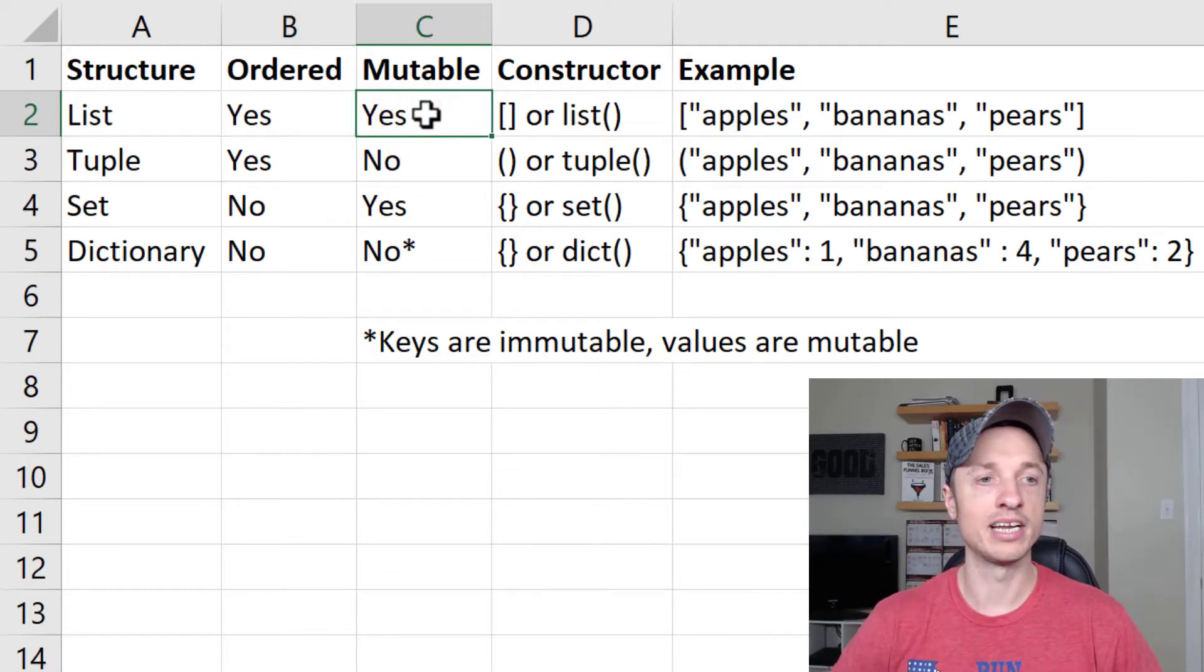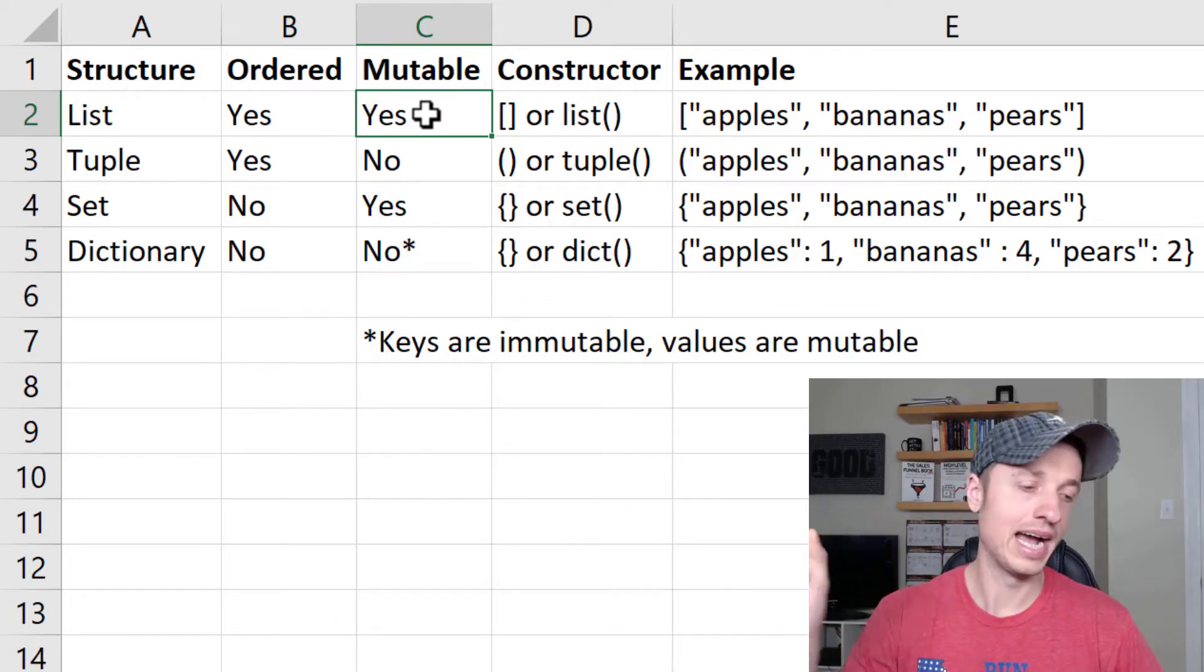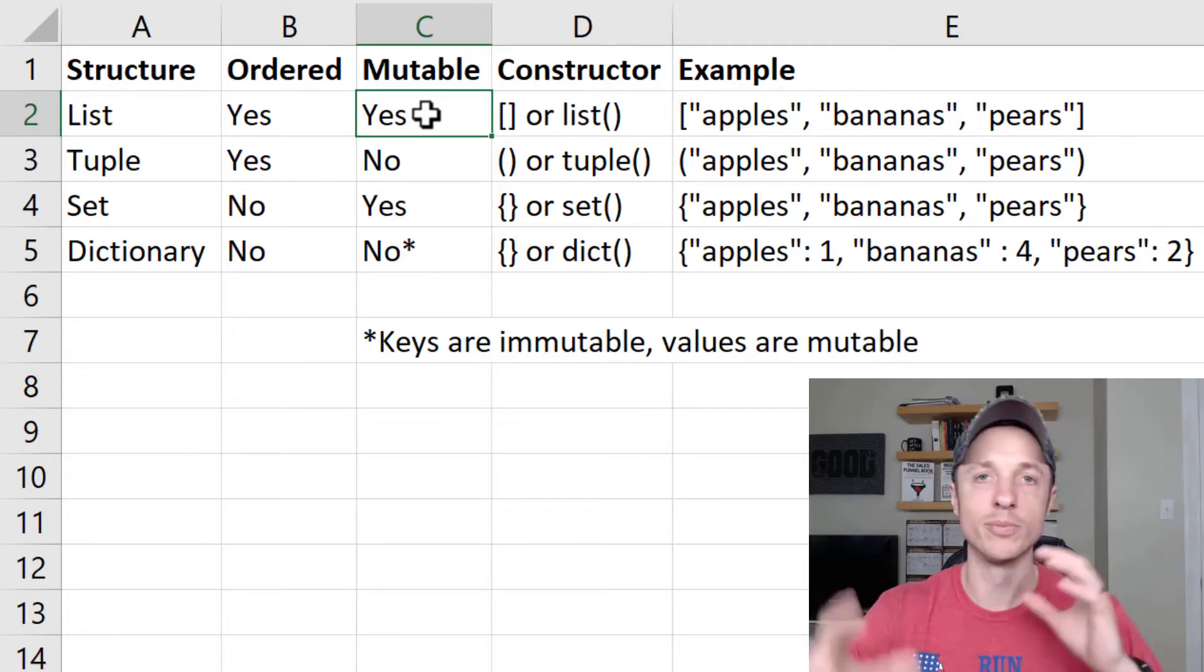Mutable means that it can be changed. So you can add to it, subtract from it, drop something, add something, etc. It's mutable, mutates.